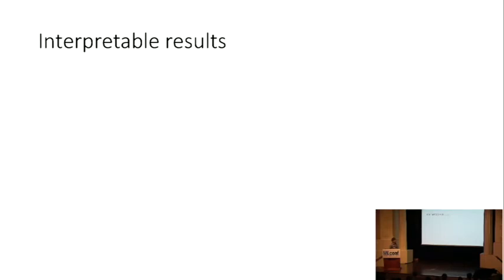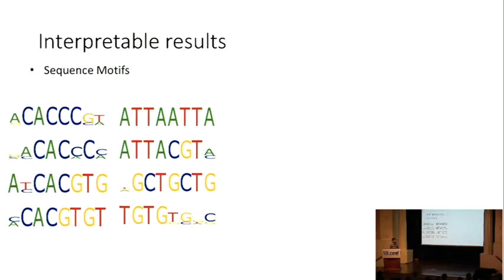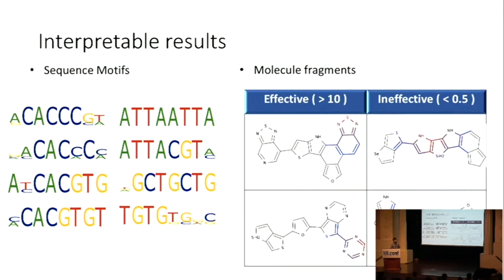Also, this kind of approach can get some interpretable results. For example, for the RNA case, we can draw some so-called sequence logo, which captures some position-specific information that you learn from the data. For the molecule case, we can also use the attention mechanism to highlight those very important fragments in the molecule. For example, we learned that such kind of fragments are very predictive for the higher efficiency value.